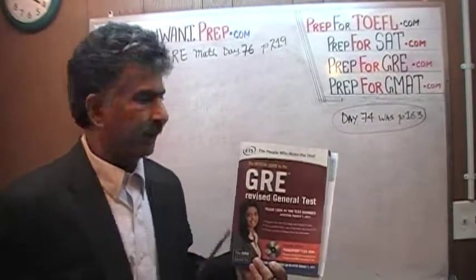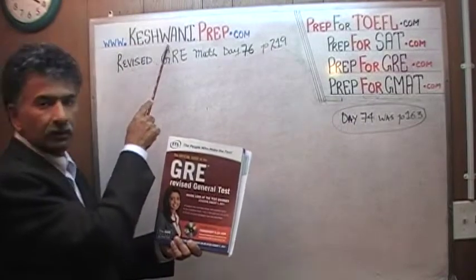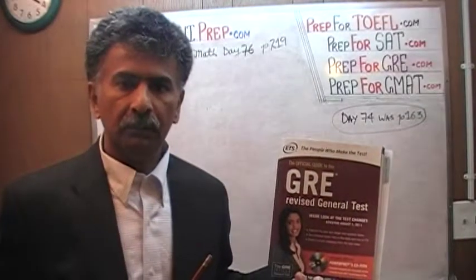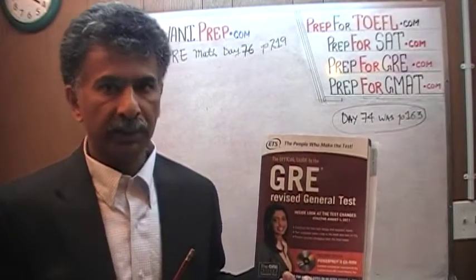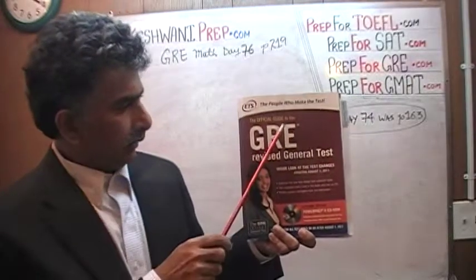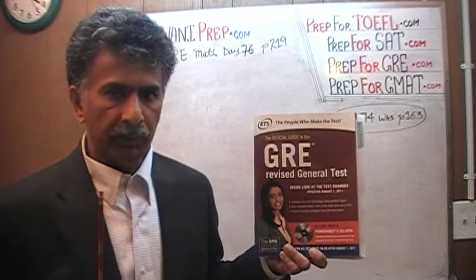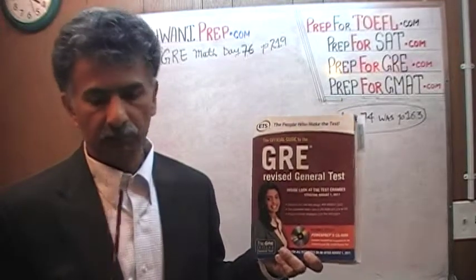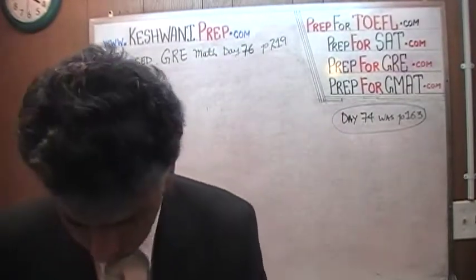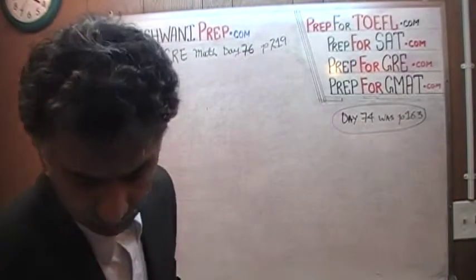Hello, my name is Keshwani — that is K-E-S-H-W-A-N-I. We are here because we want to prepare for the GRE. We have been solving math problems out of this book, the Official Guide to the GRE Revised General Test. If you do not own this book already, purchase one immediately — you are going to need it. The problem we are about to solve is on page 219. Today is our lesson number 76.